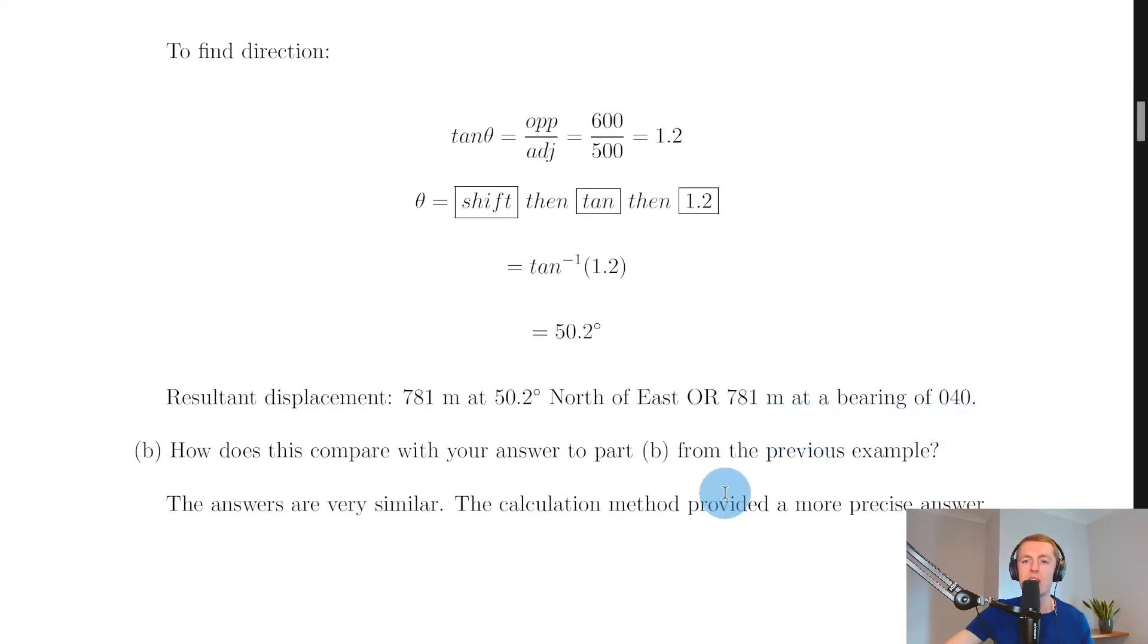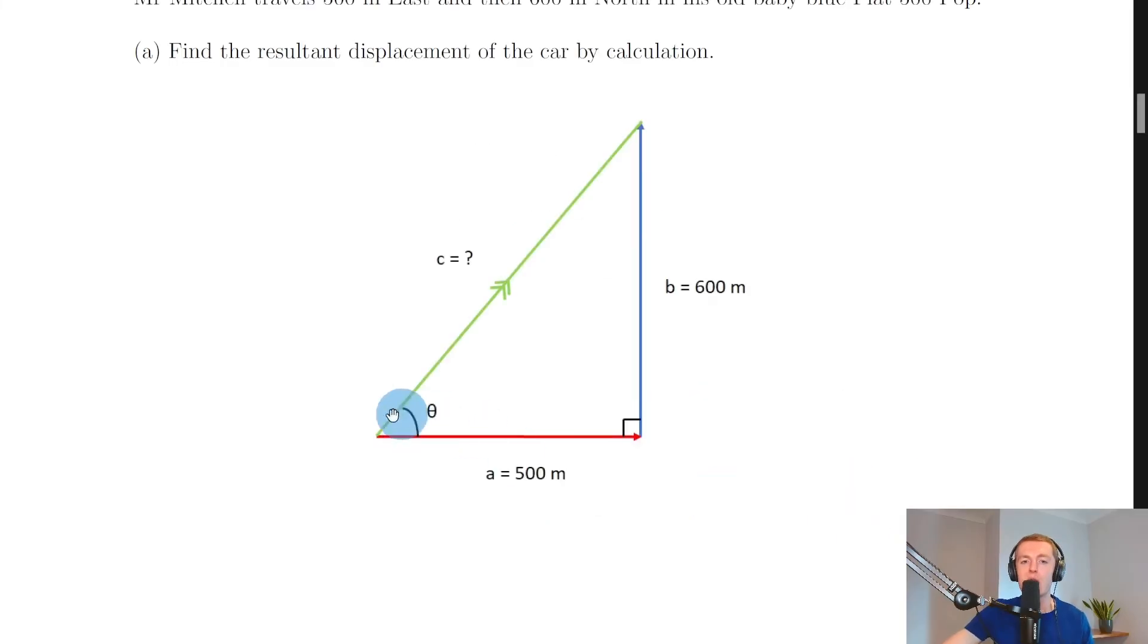Or in bearings we can say it's 781 meters at a bearing of 040, just like we saw in the example using the scale diagram method. And again, that's because we start at 000 at north and we come round until we get to the resultant vector. And if this is roughly 50.2 degrees in here, then this is going to be 39.8 degrees in here, but I've rounded it up to 40 to give us a bearing of 040, because we can't use decimal points with bearings.